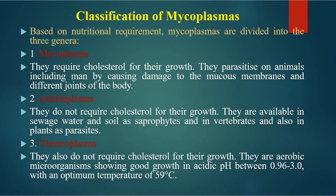Based on nutritional requirements, mycoplasma are divided into three genera. First is Mycoplasma — they require cholesterol for their growth and parasitize animals including humans, causing damage to the mucus membrane and different joints of the body. Second is Acholeplasma — they do not require cholesterol for their growth. They are found in sewage water and soil as saprophytes, and in vertebrates and plants as parasites.